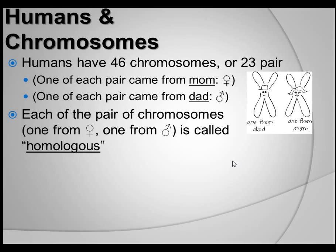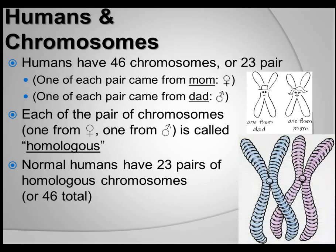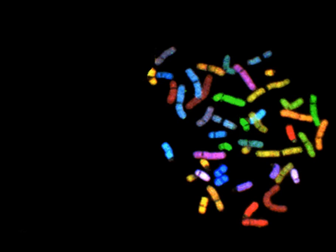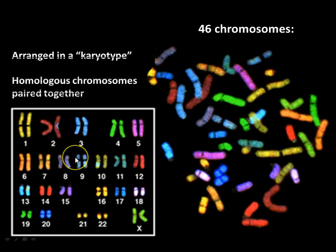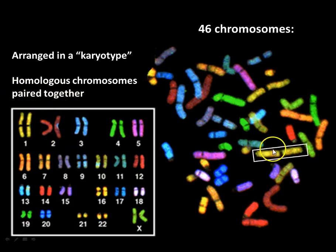Each of those pairs of chromosomes — one from mom, one from dad — is called homologous. Normal humans have 23 pairs of homologous chromosomes, or 46 total. Here's another karyotype. You can see all of those chromosomes just kind of scattered. The homologous chromosomes are paired together right here.